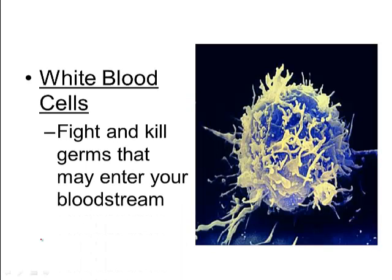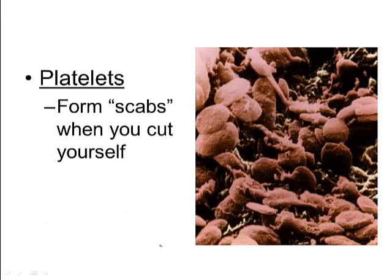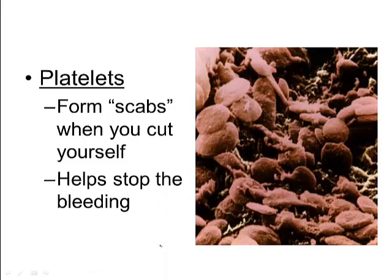White blood cells fight and kill germs that may enter your bloodstream. Some can engulf a pathogen by endocytosis and kill it, while others send out special chemicals called antibodies. Their job is to fight off diseases so you stay in homeostasis. Platelets are little pieces of red blood cells that form scabs when you cut yourself — they mix with protein to clog the cut and stop bleeding. Someone with hemophilia doesn't make the right proteins and has a hard time clotting their blood.